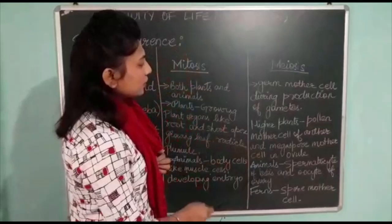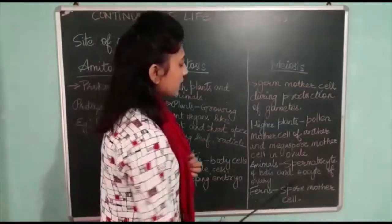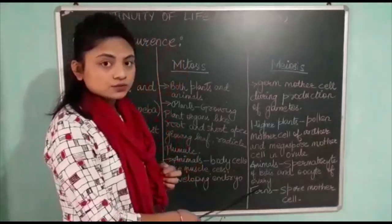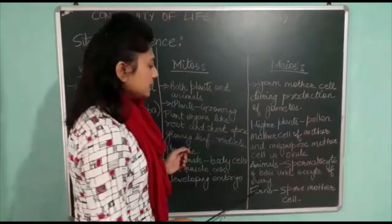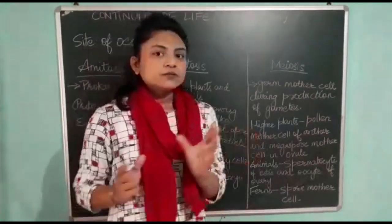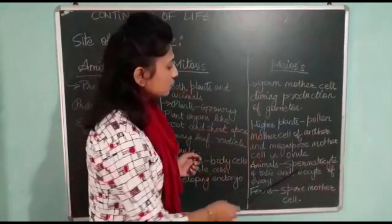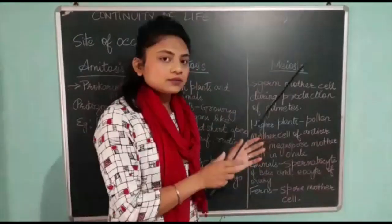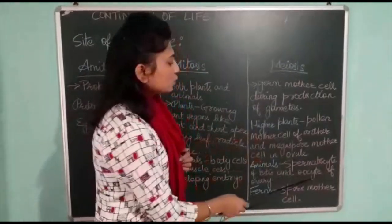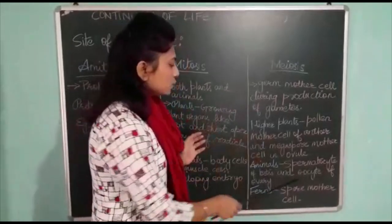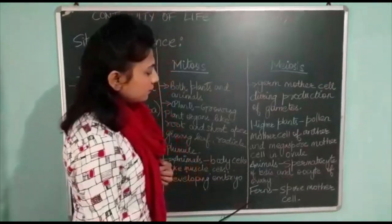In animals, meiotic cell division occurs in the spermatocytes of the testis and in the oocytes of the ovary. The testis is the male reproductive part and the ovary is the female reproductive part of an animal. In the testis, spermatocytes undergo meiotic cell division, whereas in the oocytes of the ovary, the meiotic cell division process also occurs.